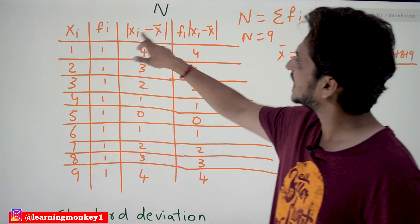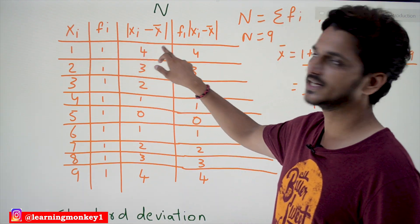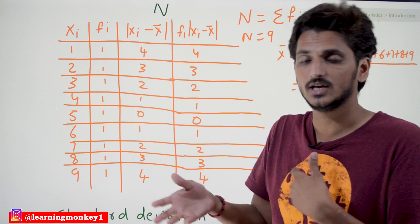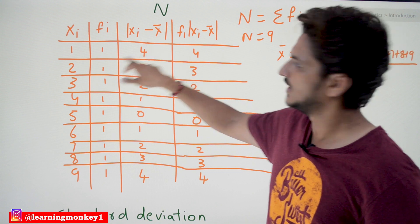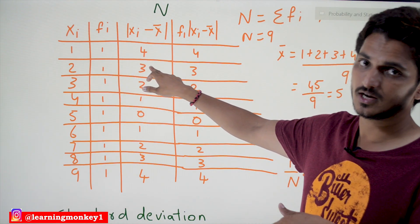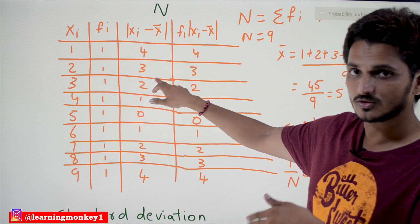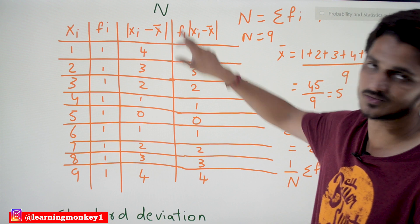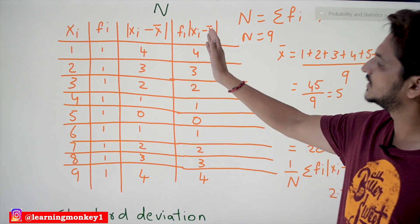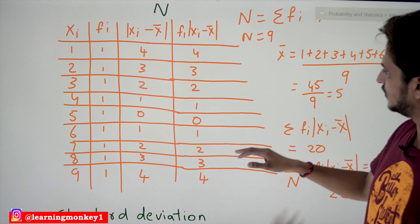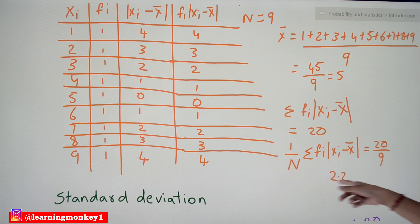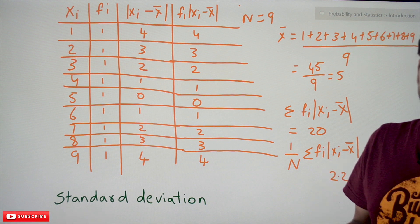Now we calculate |Xᵢ − X̄| for each point: |1−5| = 4, |2−5| = 3, |3−5| = 2, |4−5| = 1, and so on. We take the absolute value to avoid negatives. Multiplying each by its frequency (all 1s) gives the same values. The summation of all |Xᵢ − X̄| values equals 20. So mean deviation = 20 ÷ 9 = 2.2.